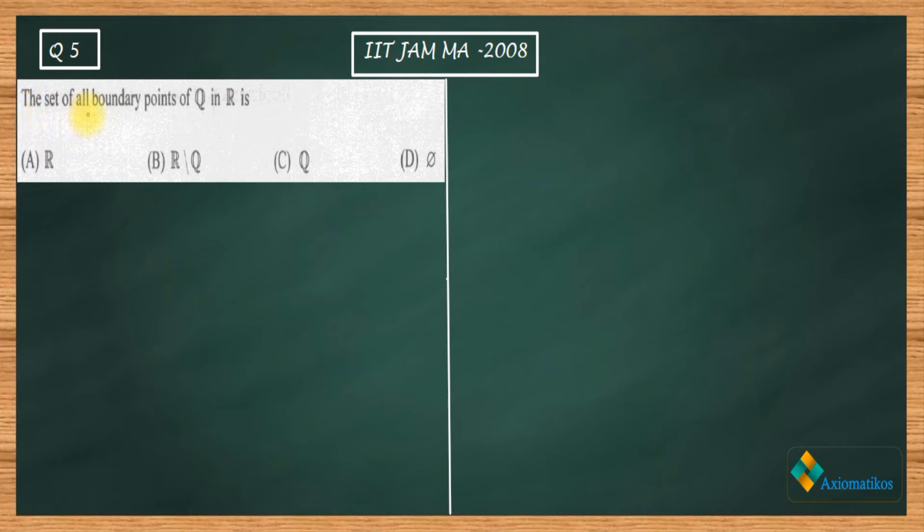So let us firstly have a look at this problem. It says the set of all boundary points of Q in R is - so what is the question asking? The question is asking us about the boundary points of a set Q. What is Q here? Q is the set of rationals. The options are R, R minus Q, Q, and empty set.